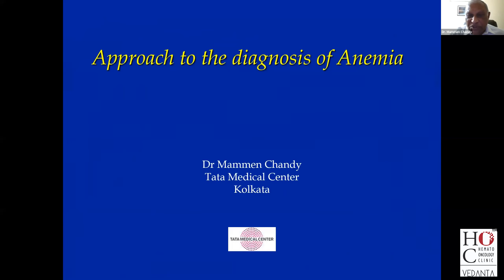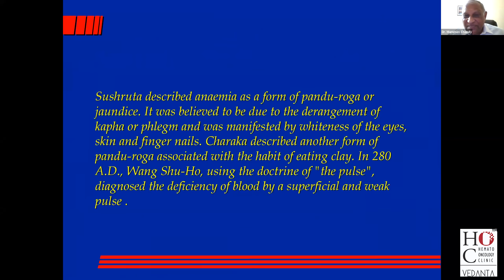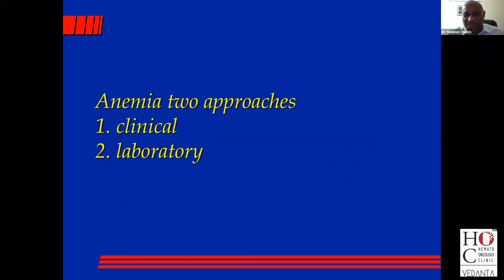This is an approach to the diagnosis of anemia and it's something that has stood me in good stead for many years. Historically, Sushruta actually described Pandu Loga and he thought it was a type of jaundice. Charaka actually described Paika — that's 200 BC. And it was in China that the doctrine that anemia can cause a weak pulse was first enunciated.